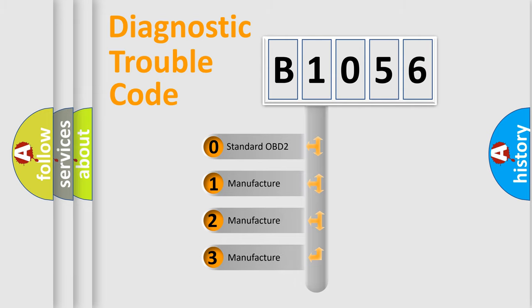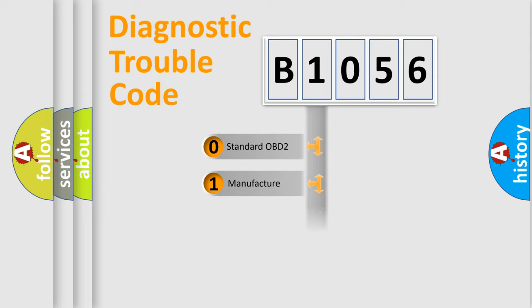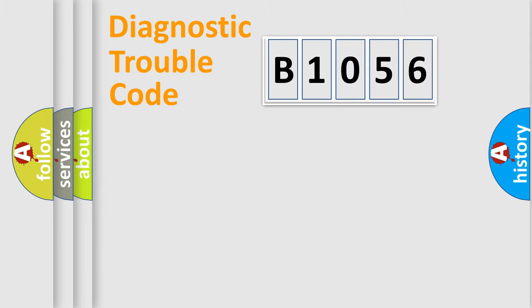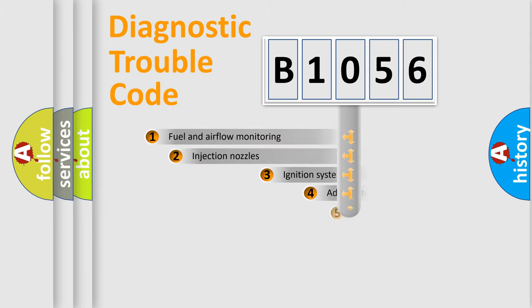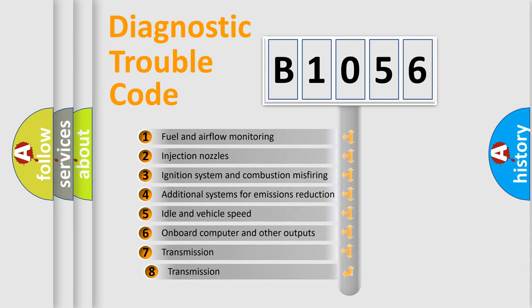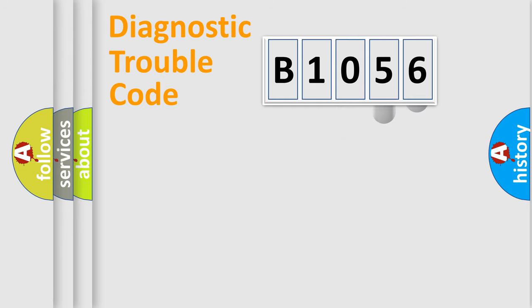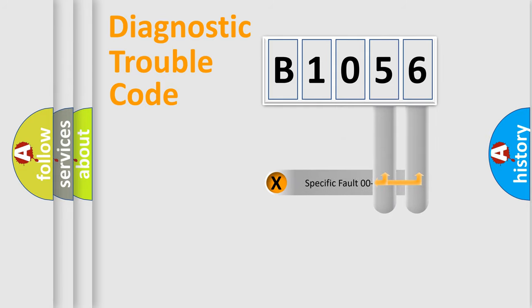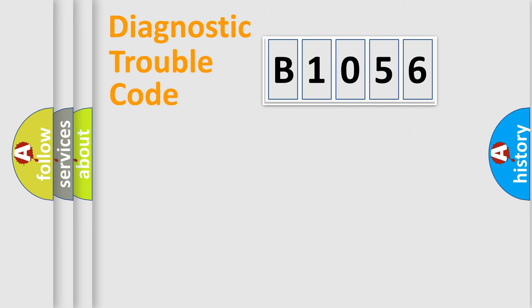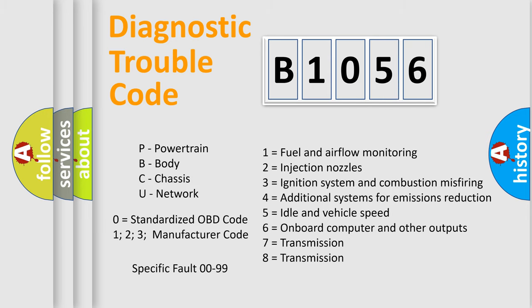If the second character is expressed as zero, it is a standardized error. In the case of numbers 1, 2, or 3, it is a more specific expression of a car-specific error. The third character specifies a subset of errors. This distribution is valid only for the standardized DTC code, and only the last two characters define the specific fault of the group. Such a division is valid only if the second character code is expressed by the number zero.